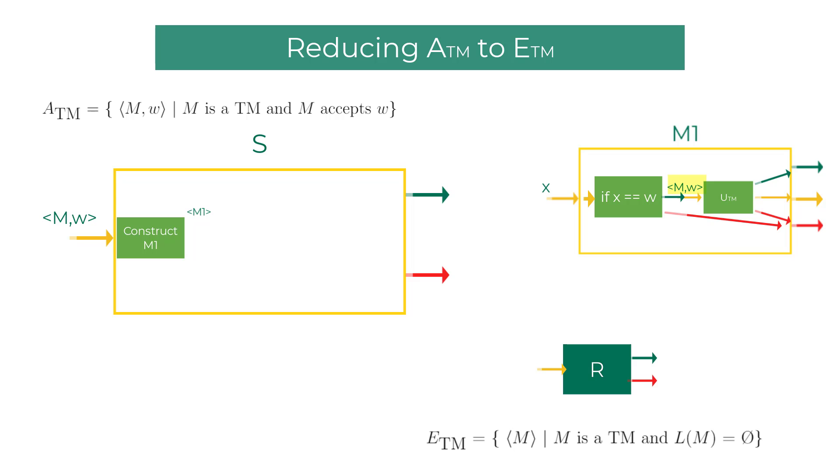We can send the machine M1 description to the ETM decider R. If R accepts M1, it means the machine M1's language is empty set, which means the machine M when simulated on string W in universal Turing machine ended up in reject state. Hence, when ETM decider R accepts M1, the machine M rejects W, so we can connect the accept state of R with the reject state of ATM decider S.